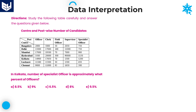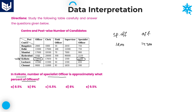Let's move on to the next question. The center is Kolkata. In Kolkata, the number of specialist officers is approximately what percent of officers? Specialist officers in Kolkata is 1,200, and officers in Kolkata is 14,900. The question is: 1,200 is what percent of 14,900, so the denominator value is 14,900.